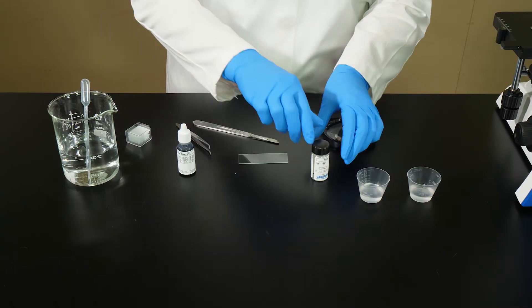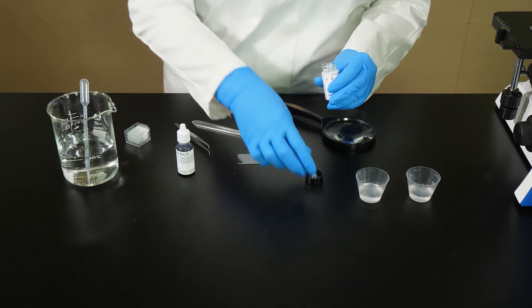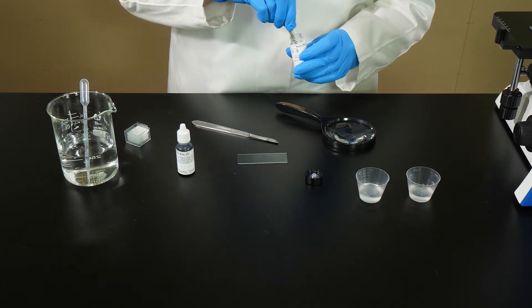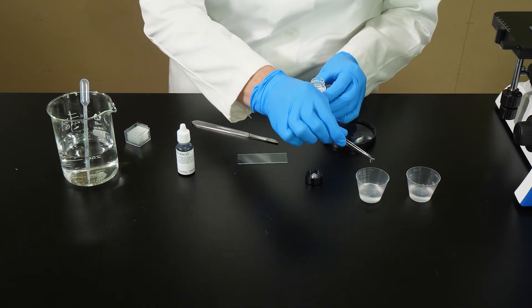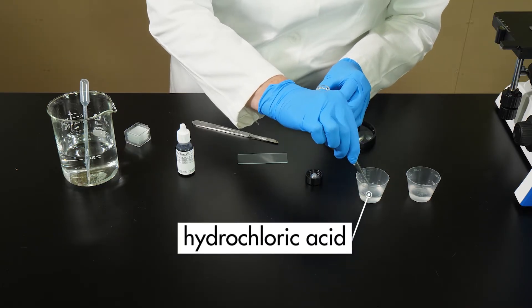Tiny samples have been cut from the tips of onion roots and preserved in an alcohol solution. Several steps are needed to prepare the sample for viewing under the microscope. To break down the plant's hard cell walls, the sample must be soaked in hydrochloric acid for four minutes.